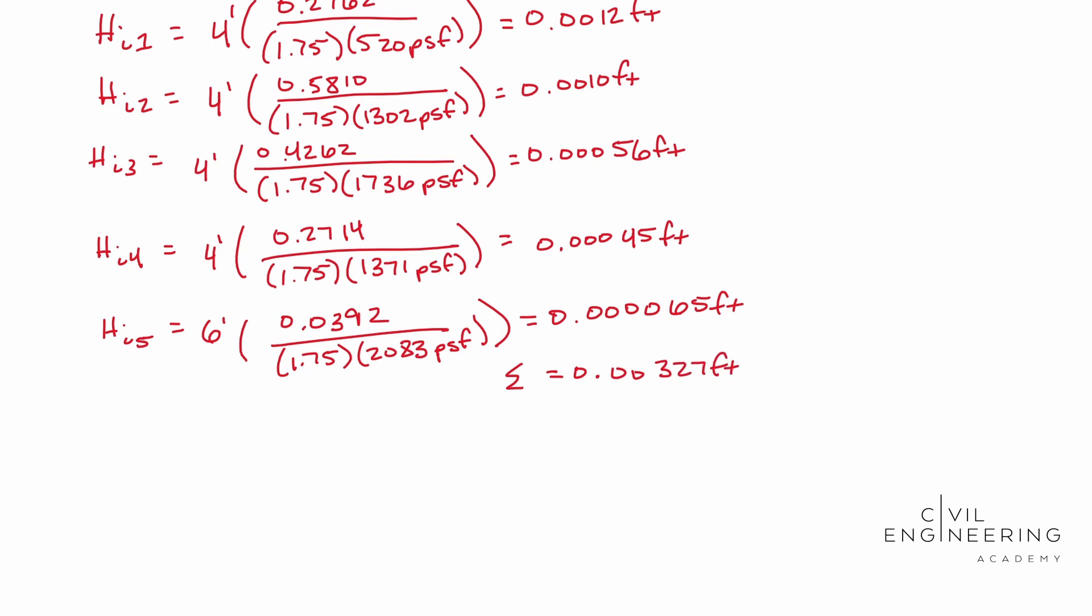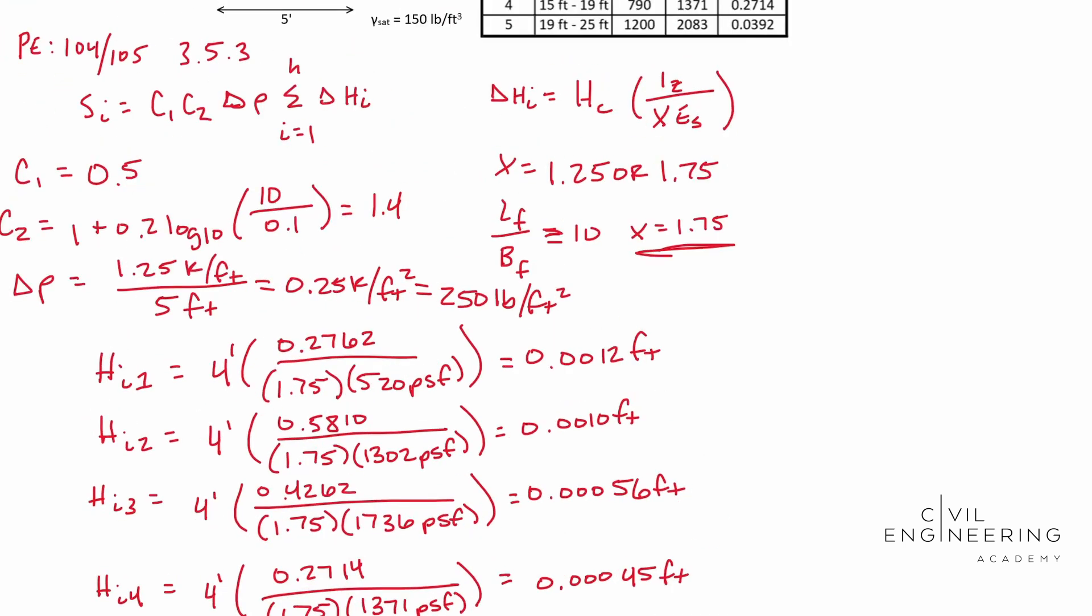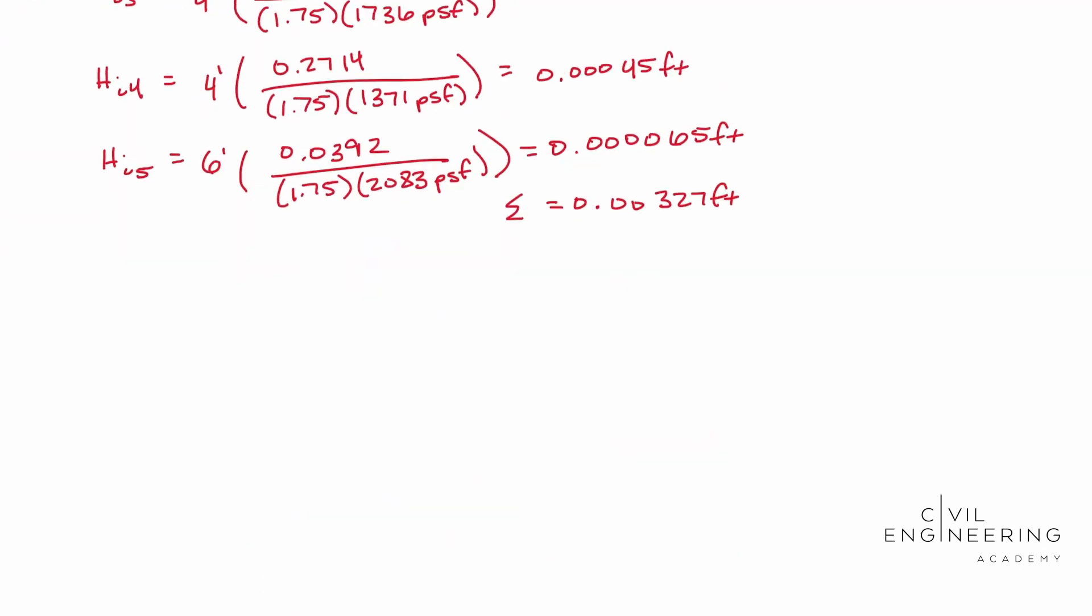And we're going to plug that into our formula, which remember our formula is our C1 times C2 times Delta P - we can scroll up and look at it real quick - times Delta P times the sum of our layers there. So let's go ahead and plug and chug. We have everything that we need.